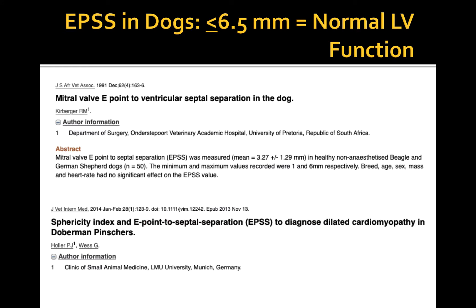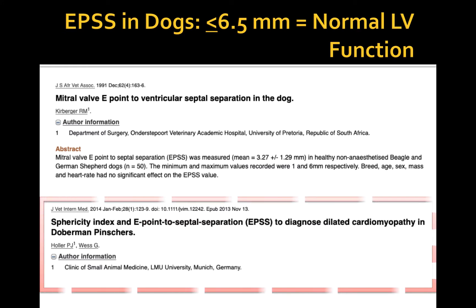There are a few veterinary papers describing EPSS measurement in dogs. A 2014 J-Vet paper showed that EPSS greater than 6.5 mm in Dobermans was 100% sensitive and 99% specific to diagnose DCM in this breed. EPSS can be utilized by ER clinicians when the results of eyeball evaluation and fractional shortening measurement are equivocal and an extra piece of information is required to determine LV function.